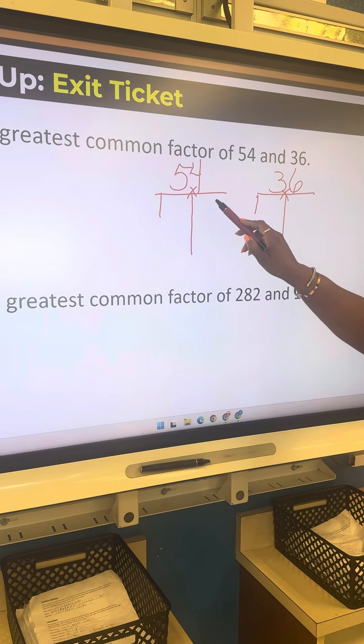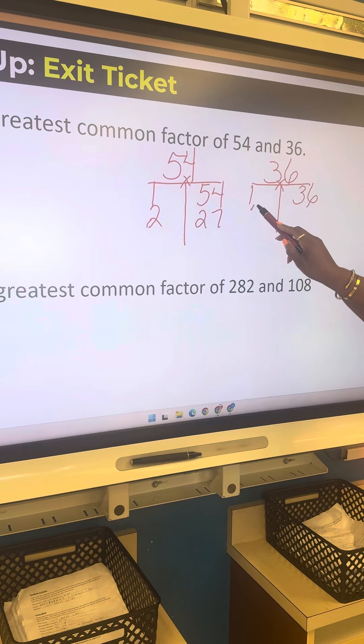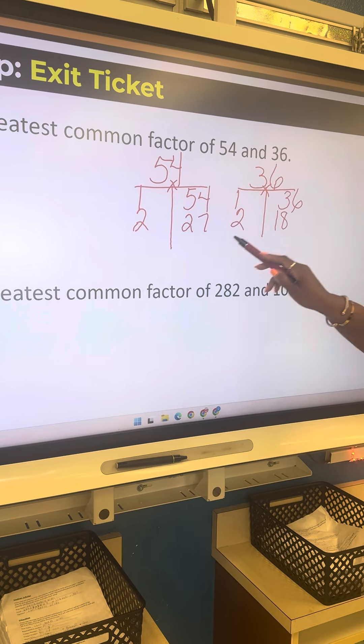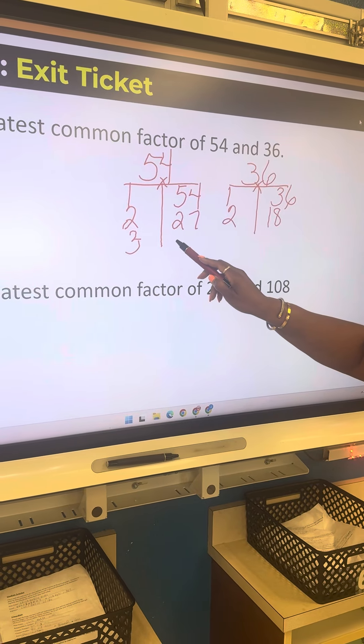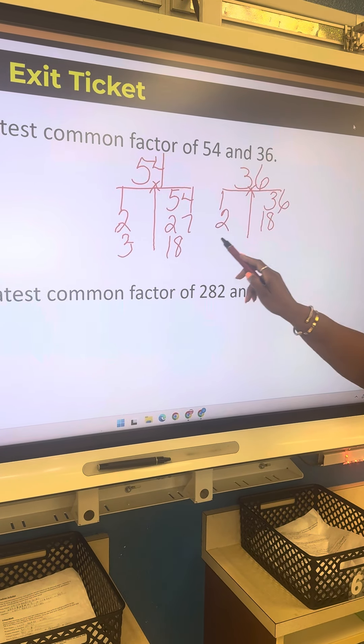Remember I said greatest common factor, GCF, t-chart, factor factor. We always start with one. So one times what is fifty-four? Fifty-four. One times what is thirty-six? Thirty-six.